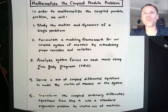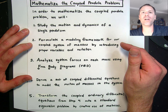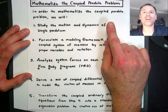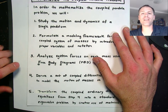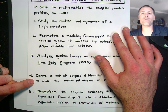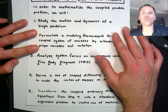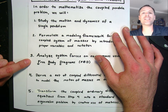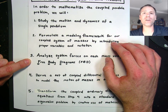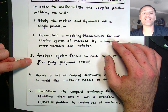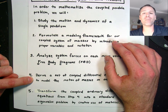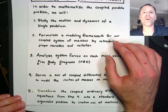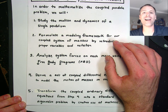In this video we're going to continue our discussion of translating the coupled pendula problem into a standard eigenvalue problem. Specifically we're going to continue with steps three and four. We'll do an analysis of system forces on each mass using free body diagrams, and then show how we can use that analysis to set up the coupled differential equation governing the coupled pendula problem. Once we finish, we'll be ready to move on and translate this into a standard eigenvalue problem.